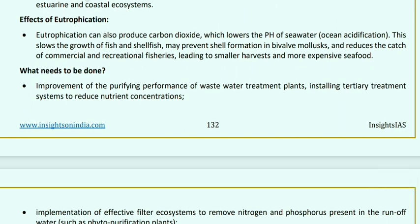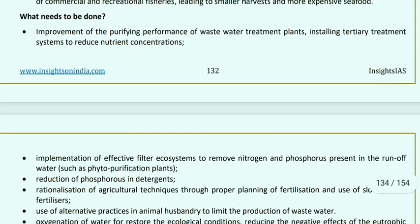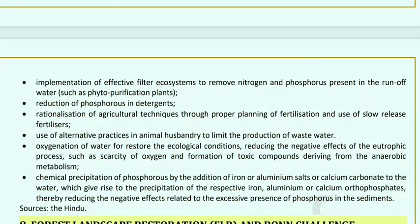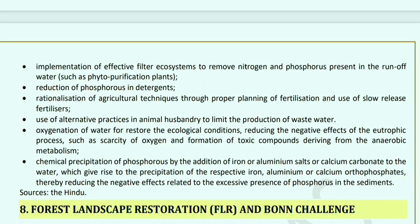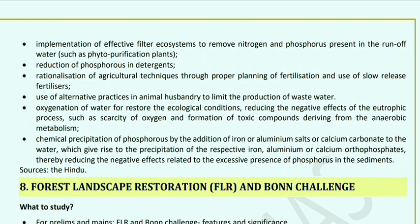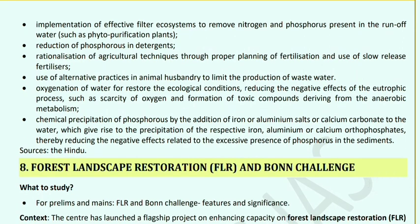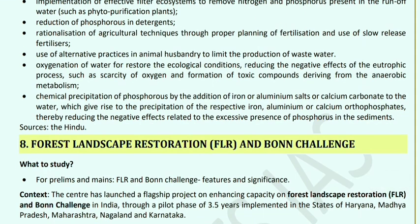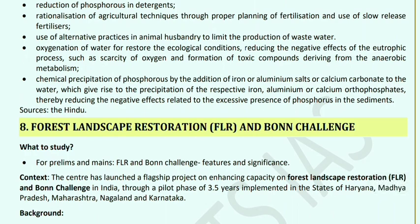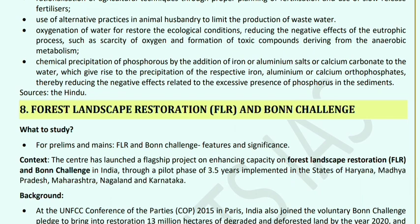What needs to be done to address eutrophication? Improvements include bringing wastewater treatment and tertiary treatment plants, implementing filter ecosystems, reducing phosphorus in detergents, rationalizing agricultural techniques through proper fertilization planning, using alternative practices in animal husbandry to limit wastewater production, oxygenating water to restore ecological conditions, reducing negative effects of the eutrophic process such as oxygen scarcity and toxic compounds from anaerobic metabolism, and chemical precipitation of phosphorus by adding iron, aluminium salts, and calcium carbonate to water.